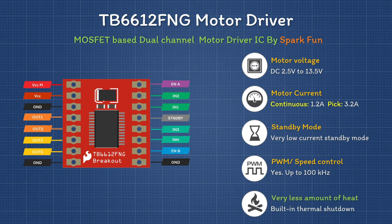Key specifications of the VNH2SP30: motor voltage range is 12 to 16 volts; it can handle up to 14 amps continuously and 30 amps at peak. It has a current sense output to monitor motor current, supports PWM signals up to 100 kHz, produces very little heat, and includes a built-in thermal shutdown feature. This driver is available in various breakout board forms: single-channel module, dual-channel module, and a dual-channel Arduino shield.